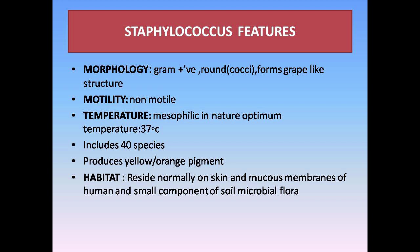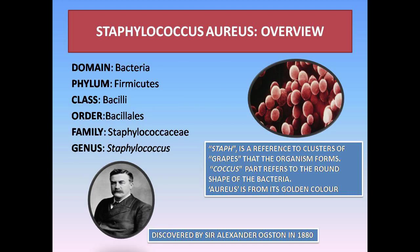Now Arushree will help us explain Staphylococcus aureus. Staphylococcus aureus is a yellow pigment colony which was discovered in Scotland by Sir Alexander Ogston in 1880. Staphylococcus aureus belongs to the domain Bacteria, phylum Firmicutes, class Bacilli, order Bacillales, family Staphylococcaceae, genus Staphylococcus.